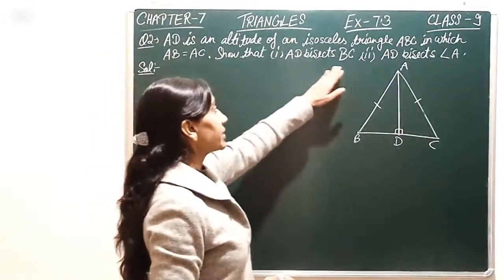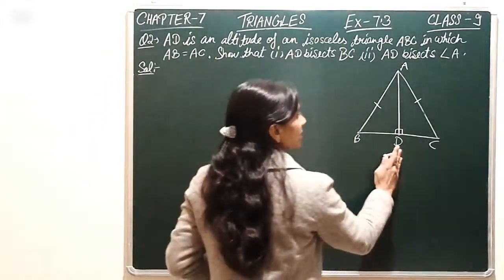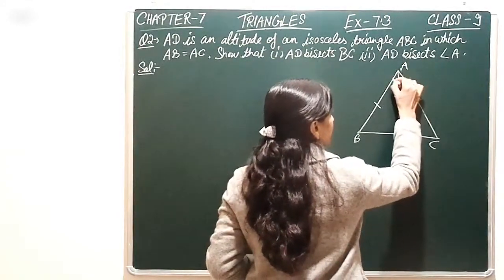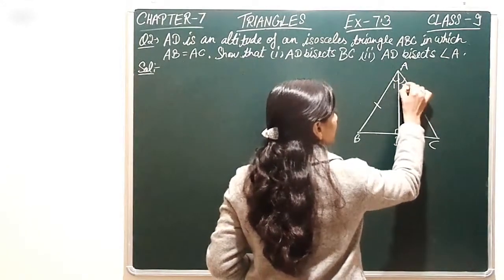Here we have to prove AD bisects BC, that means BD and DC are equal, AD bisects A. That means here we have two angles created, angle 1 and angle 2.